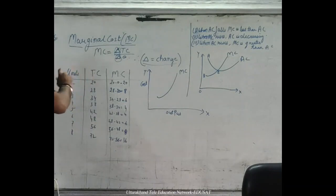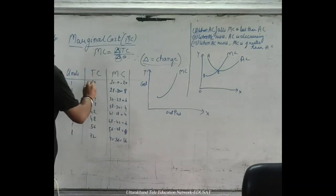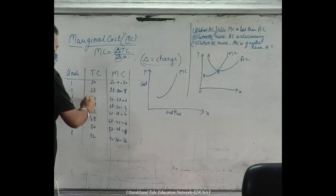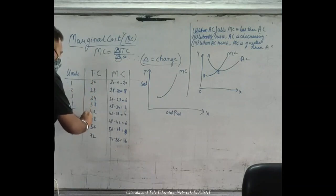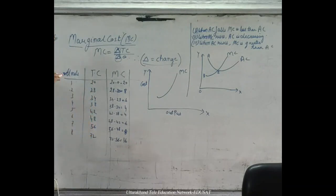Now we have the total cost column. The total cost values are: 20, 28, 34, 42, 48, 58, 72.